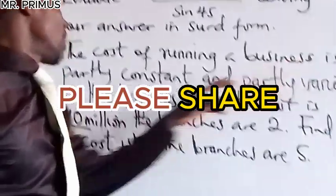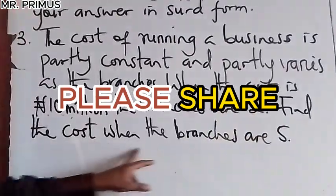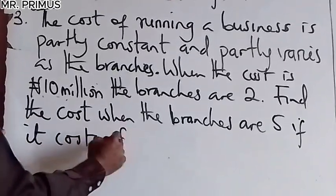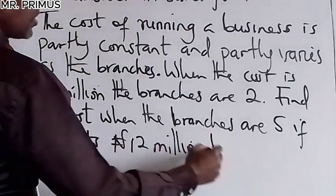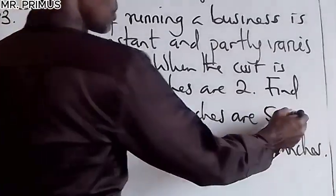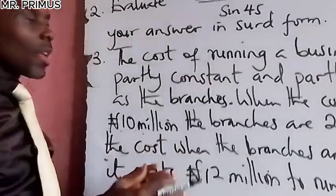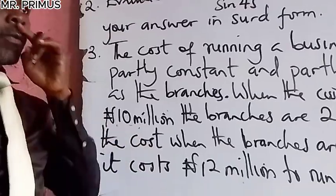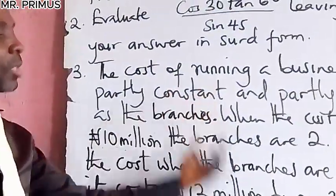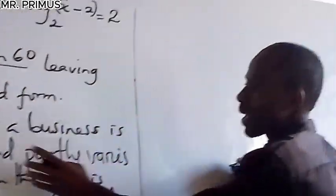The cost of running a business is partly constant and partly varies as the number of branches. When the cost is 10 million, there are 2 branches; when the cost is 12 million, there are 3 branches. Find the cost when there are 5 branches. This is a partial variation problem, which involves a simultaneous equation and is more complex than direct, inverse, or joint variation.